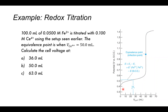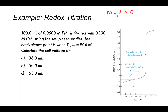The equivalence volume of 50 mL is derived as follows: moles of Fe²⁺ = 0.100 L × 0.0500 mol/L = 5×10⁻³ mol. Since Ce⁴⁺ reacts one-to-one with Fe²⁺, we need 5×10⁻³ mol of Ce⁴⁺. Volume = moles / concentration = 5×10⁻³ / 0.100 = 0.050 L = 50 mL. Essentially, moles = volume × concentration, so volume = moles / concentration.